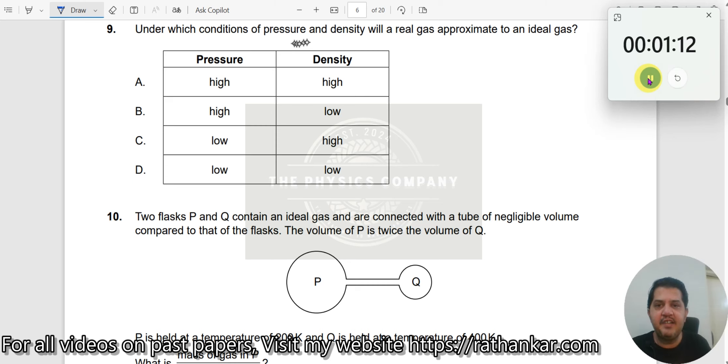Question number 9: Under which conditions of pressure and density will a real gas approximate to an ideal gas? Now first, let us understand what is an ideal gas.